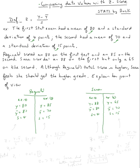So it says although Reginald's total score is higher, Sarah feels she should get the higher grade. Explain her point of view. In other words, we're going to compare the z-scores.